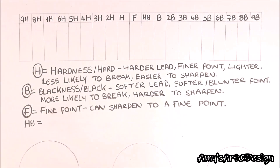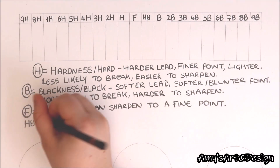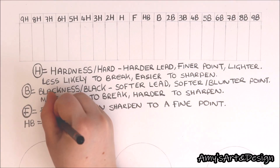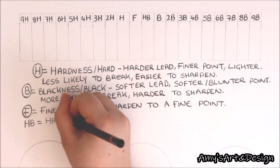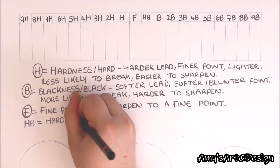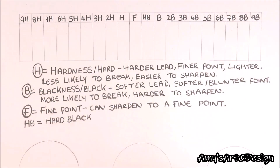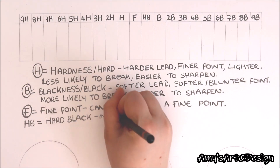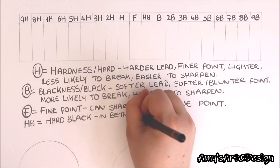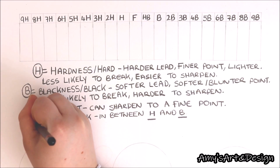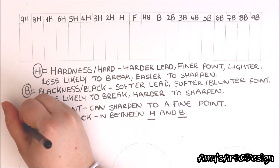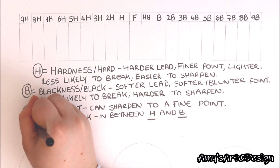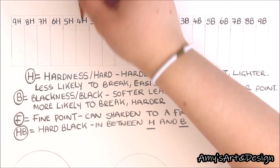Last but not least, we have the letters HB, which stands for hard black, meaning this pencil is effectively in between the H and B pencils. That is what the HB pencil stands for in the gradient chart.